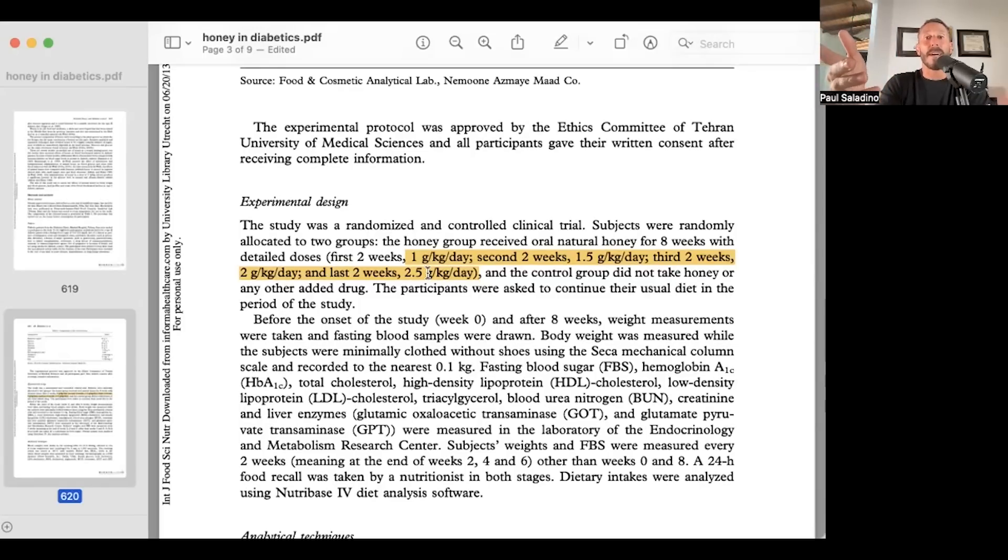At the beginning of the study, a 70 kilogram diabetic is going to get 70 grams of honey. Then they're going to get 105 grams of honey. Then they're going to get 140 grams of honey per day. And then at the end, they're going to get 175 grams of honey per day for a 70 kilogram human. So a lot of honey being given to these people over eight weeks.